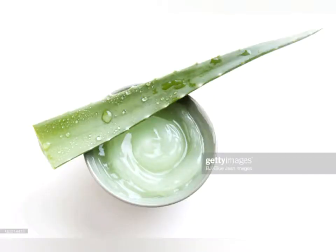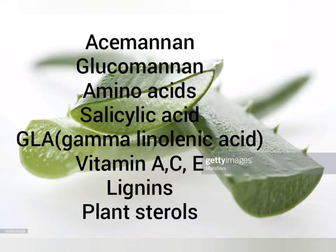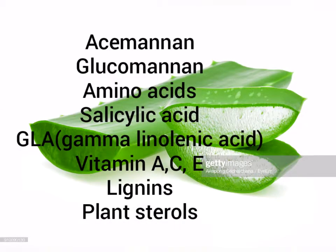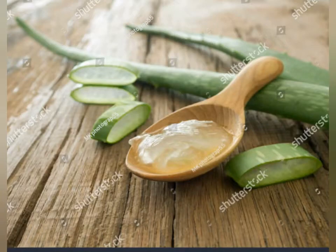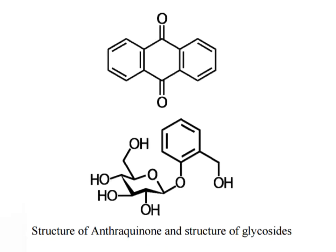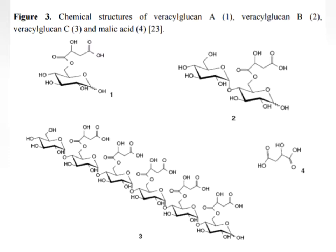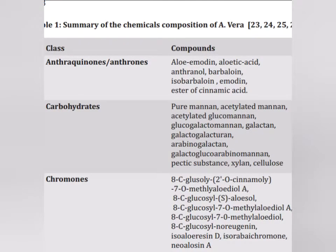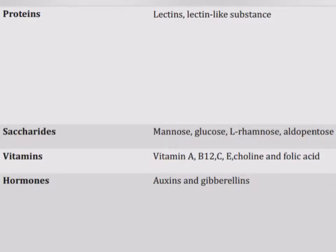Other compounds in the gel include carboxypeptides, magnesium, zinc, calcium, glucose, cholesterol, salicylic acid, prostaglandins, gamma-linolenic acid, vitamins A, C, and E, lignins, amino acids, saponins, and plant sterols. The leaf latex contains mainly anthraquinone glycosides such as aloin, aloe-emodin, and barbaloin. These are the principal chemical compounds found in aloe vera — you can screenshot the list for reference.